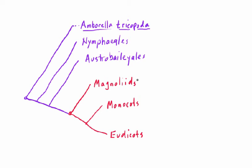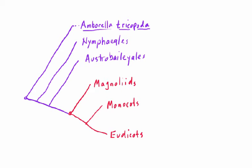There are actually three major groups here and two minor ones as well. We're going to be focusing our efforts on these three major clades, which are the Magnoliids, the Monocots, and the Eudicots.